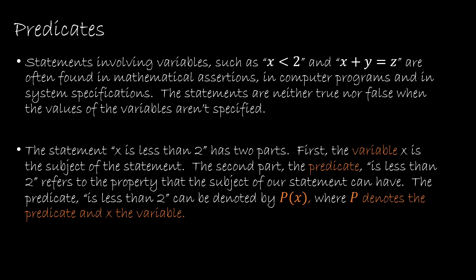Here's what a predicate is all about. If we have a statement like x is less than 2, or x plus y equals z, these are things we see in mathematics and computer programming all the time. These statements aren't true and they're not false unless I give you a value. So if I said x is 5, then x is less than 2 now has a truth value — because 5 is not less than 2, so that would be false.